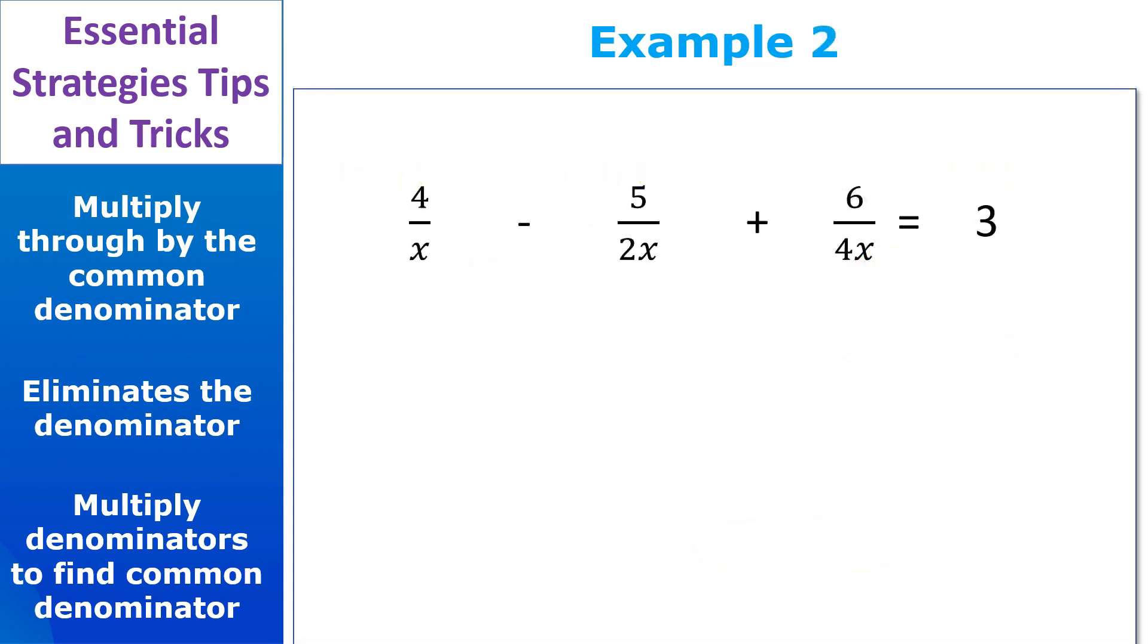Okay, this one works the very same way as the last one. Multiply the common denominator through the entire equation. In this case, we can use 4x as the common denominator. Now, if you wanted to use 8x, that's fine too. It'll totally work. All right, now we just cancel stuff off.